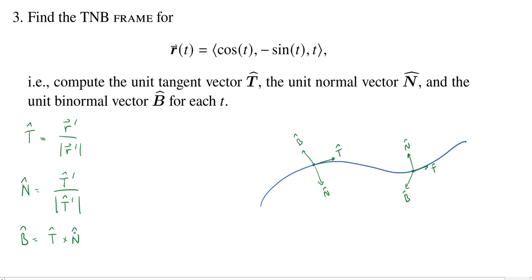All right. So let's give this a try. So first thing, we need the derivative of R. So we just differentiate component by component. We get negative sine of t. We get negative cosine of t. And then we get one.